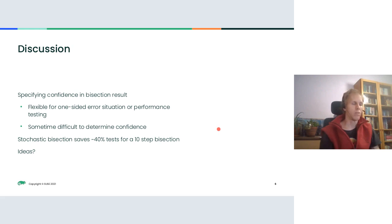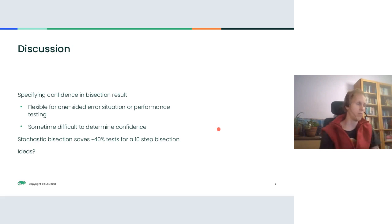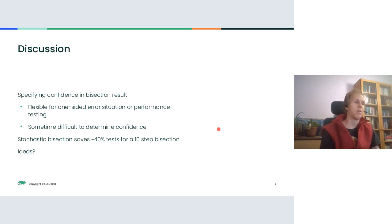Stochastic bisection can do better than that — it only needs about two-thirds of those tests, or about 40% fewer tests, to get to the result with the same reliability. That's essentially what I have prepared.